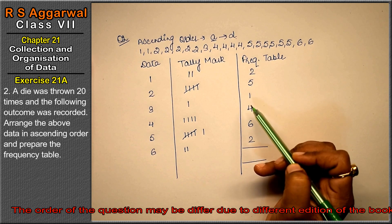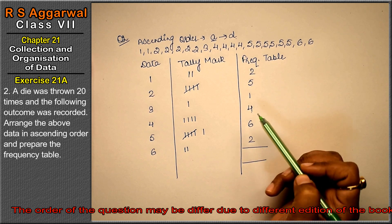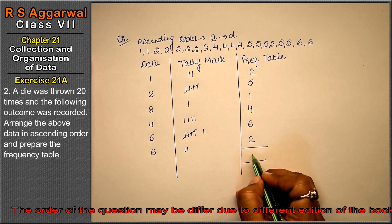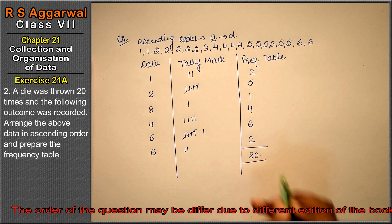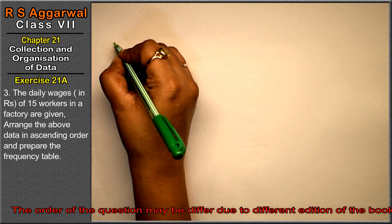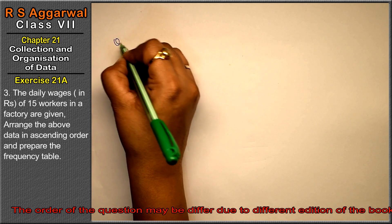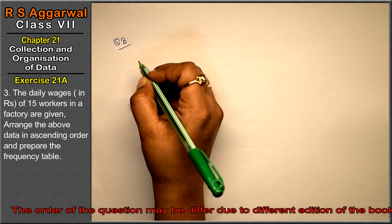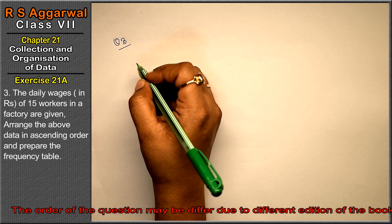2 + 5 + 1 + 4 + 6 + 2 = 20. This is the answer. Now let's do question number 3 of Exercise 21a.